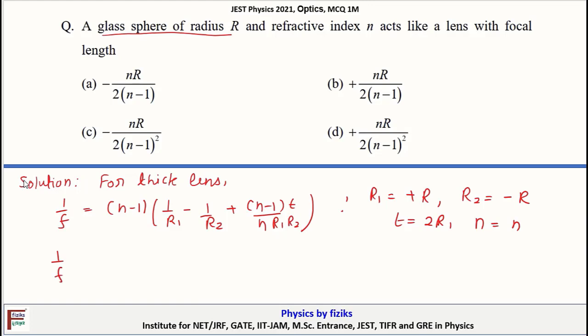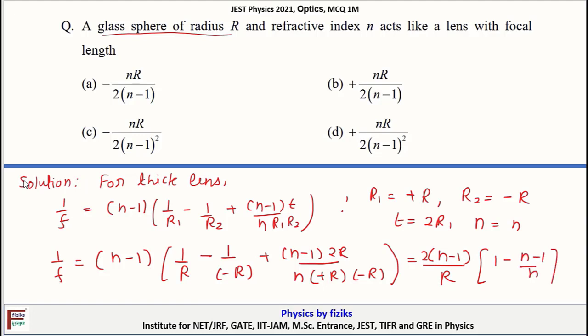Substituting these values, we would get 1/f equals (n-1)(1/r - 1/(-r)) + (n-1)*2r/(n*r*(-r)). This would simplify as (n-1)*2/r*(1 - (n-1)/n).